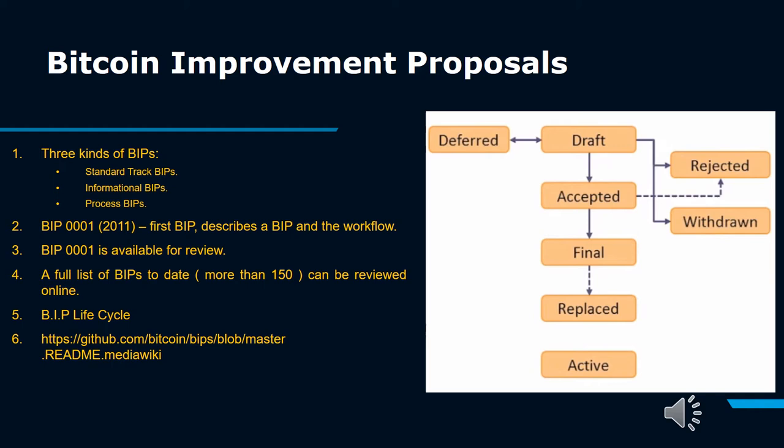BIP-0001, from 2011, is the first BIP and describes a BIP in the workflow. BIP-0001 is available for review. A full list of BIPs to date, more than 150, can be reviewed online. BIP Life Cycle: According to the type of BIP, it may require community consensus. When any of the above types of BIPs are submitted, they go through various statuses such as drafted, verified, accepted and rejected, or replaced. Shown is a BIP life cycle in which typical paths of the statuses of a BIP are shown. The given GitHub link has details.